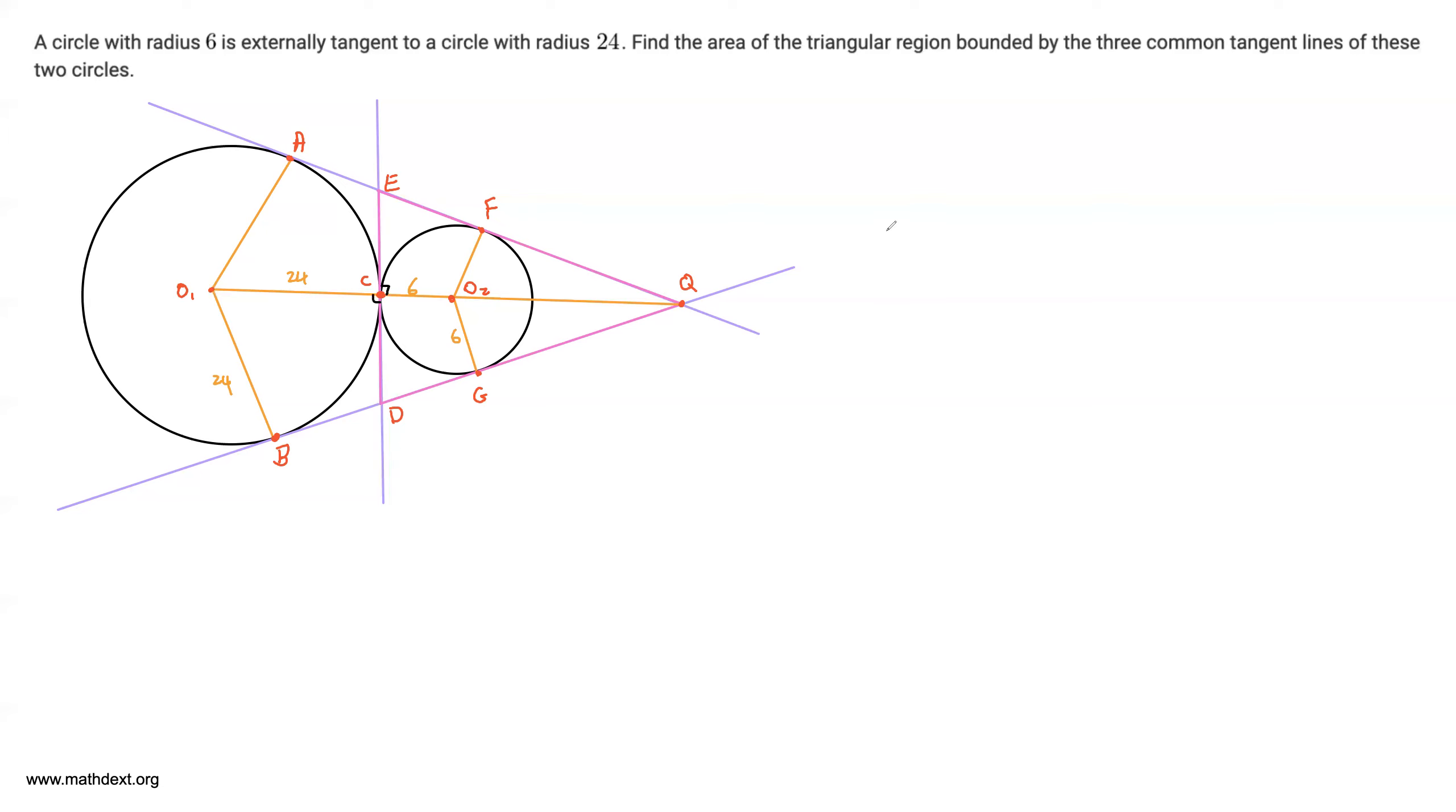And that's going to help us, because now we know that the area of QED is equal to half times the base times the height, right? The area of any triangle is half times the base times the height. We're going to use ED as our base and QC is our height. So the area of QED is half times ED times QC. And that's really cool, because now all we need to do is find QC and ED.